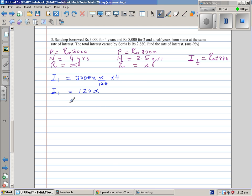Your I2, interest in the second situation, would be 8,000 times 2.5 over 100. No, your rate of interest is x, so this is x over 100.